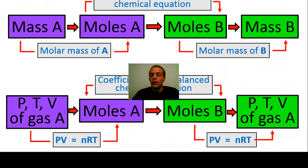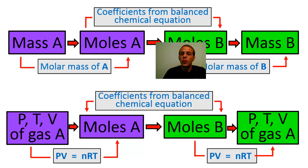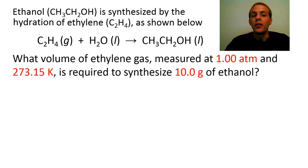In the next example, or in the only example that I have for you, we're going to do one of these types of stoichiometric conversions, and we're going to start from the mass of one thing and go to the volume of another thing. So here's what we're going to do. The problem says that ethanol, CH3CH2OH, is synthesized by the hydration of ethylene, C2H4, as shown below. So this is our reaction equation. We have one mole of ethylene reacting with one mole of water to make one mole of ethanol. And the problem asks us, what volume of ethylene gas measured at a pressure of 1.00 atmospheres and 273.15 kelvins is required to synthesize 10.0 grams of ethanol.